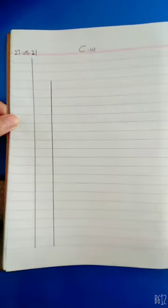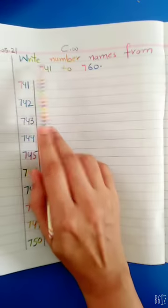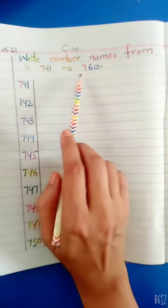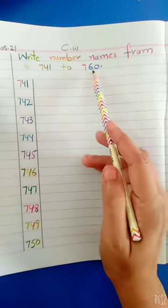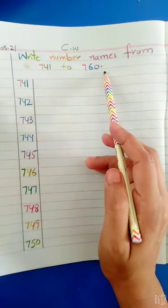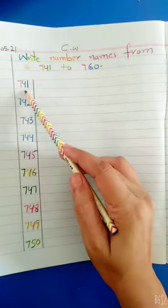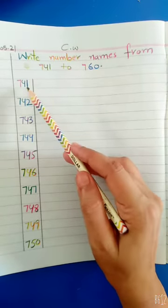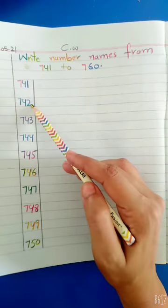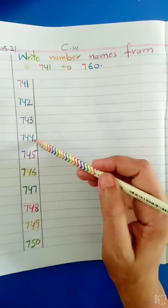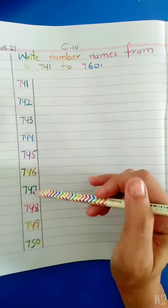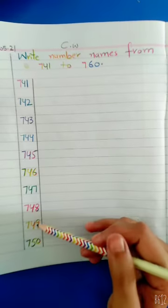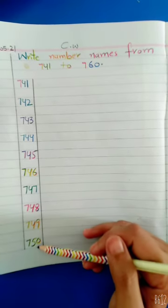Today our heading is: Write number names from 741 to 760. First we will write the numbers: 741, 742, 743, 744, 745, 746, 747, 748, 749, 750.